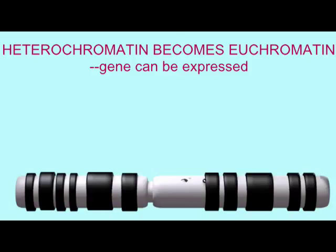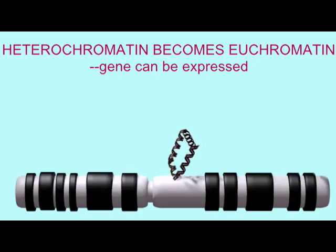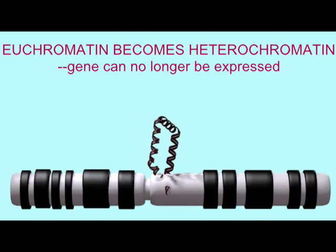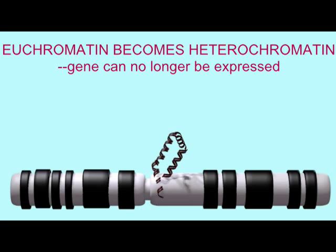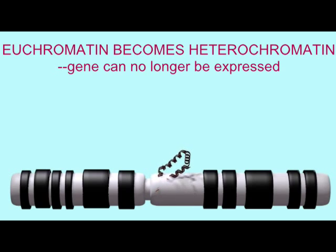In order to activate transcription, the tightly packed heterochromatin must be converted into the more loosely packed euchromatin. One of the ways of inactivating transcription is to convert loosely packed euchromatin into the more tightly packed heterochromatin.